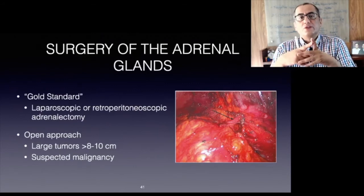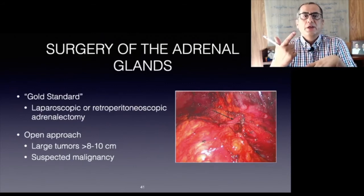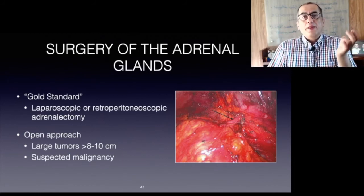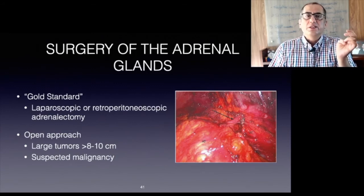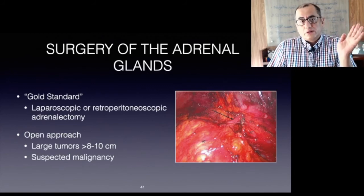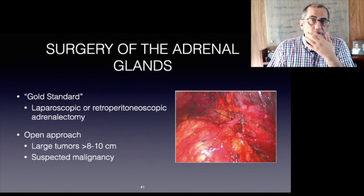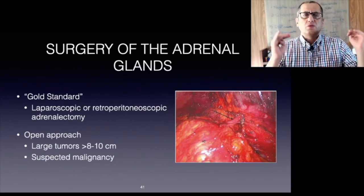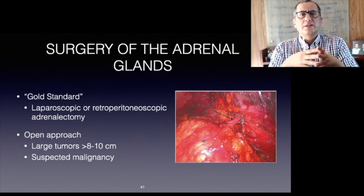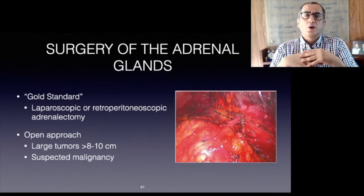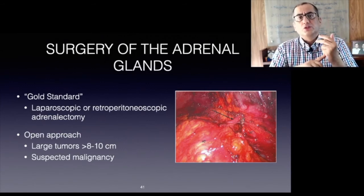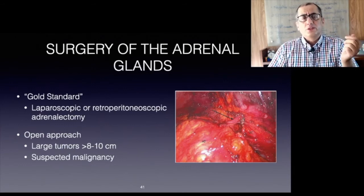Laparoscopic or retroperitoneoscopic adrenalectomy is the gold standard for resection of adrenal tumors, except for those with signs of malignancy. The transperitoneal approach offers a better view of the adrenal region and is easier to learn as most surgeons are familiar with the transperitoneal view. The advantage of the retroperitoneoscopic approach is the minimal dissection required, going directly to where the adrenal glands are. In small bilateral tumors or hereditary tumor syndromes, subtotal dissection is warranted to avoid steroid dependence.